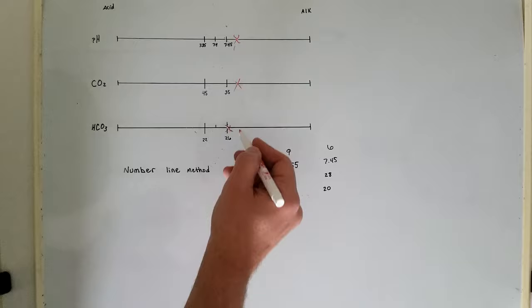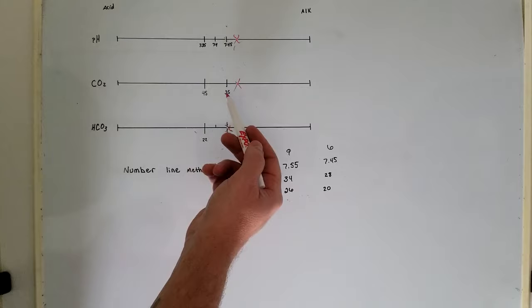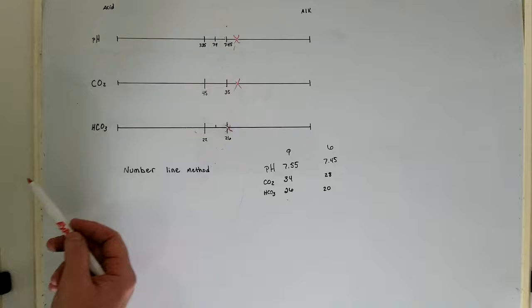The bicarb is 26, which is in the normal range but still a little up towards the alkaline side. When you do your CO2 line, make sure that these are backwards like this—the larger number on the left, the smaller number on the right—because the more CO2 in your blood, the more acidic it is.